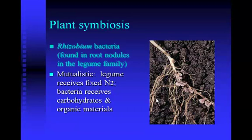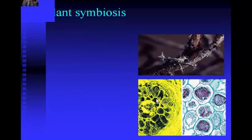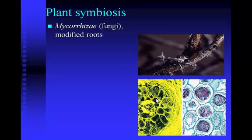Plants can also have a mutualistic relationship with fungi. A mycorrhizae is a fungus that grows on modified roots — it's a similar type of relationship. The fungus receives sugar, and the plant gets increased root surface area and increased phosphate uptake.